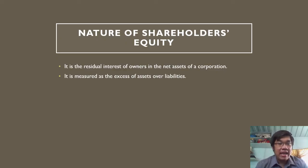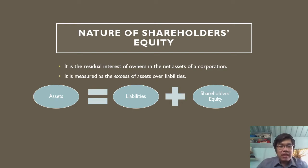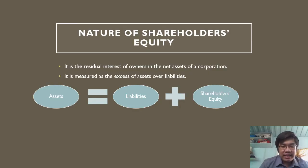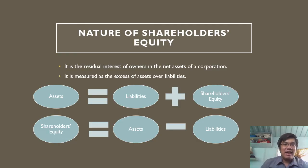The measurement of shareholders' equity is the difference between assets and liabilities. Remember the basic accounting equation: assets is equal to the sum of liabilities and equity. The definition of shareholders' equity is derived from that basic accounting equation. Stated otherwise, to get shareholders' equity, transpose it to the left side — shareholders' equity is equal to assets minus liabilities.